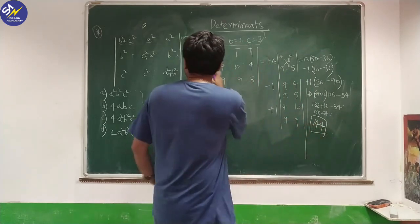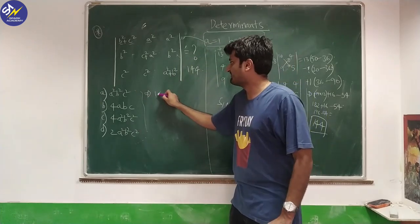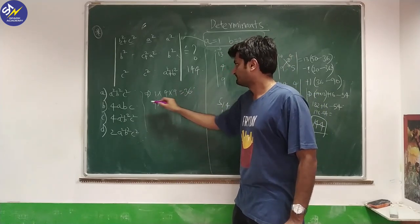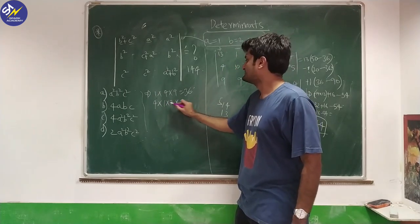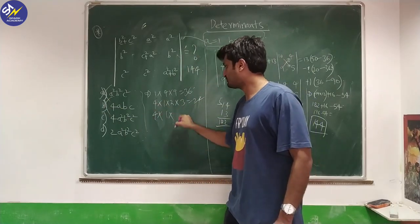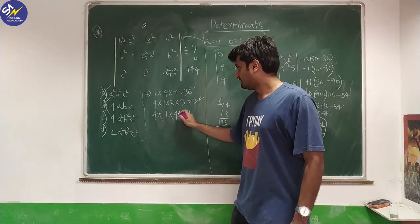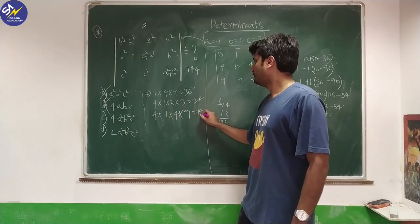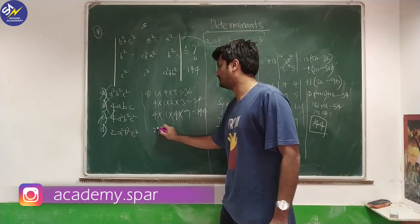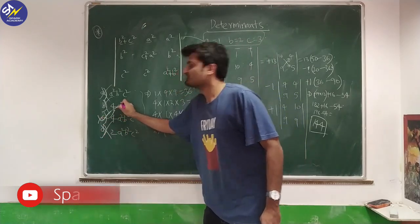We got the determinant value as 144. Now let's check the options by substituting A=1, B=2, C=3. Checking option C, which is 4A²B²C²: that gives 4 × 1 × 4 × 9 = 144. The other options give 36, 72, etc., which do not match. So option C, which is 4A²B²C², is the correct answer.